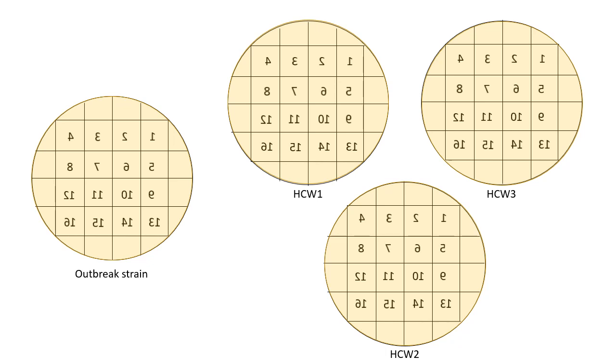Now once you've got the cultures, the lawn cultures as you can see in the animation, the next step would be to add the typing phages or the typing viruses. Phages are nothing but viruses that infect bacteria, so you're going to add the typing phages one square at a time.